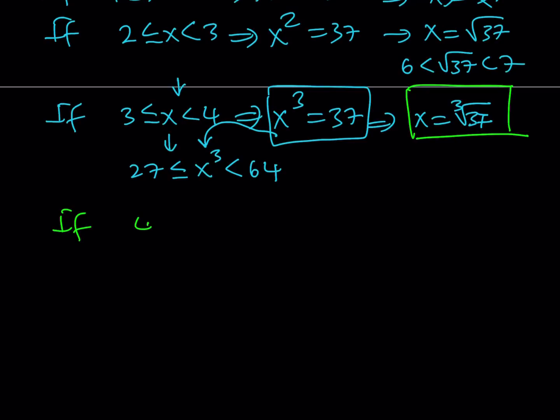If x is between 4 and 5, its floor value is going to be 4 because it's 4 point something, and we're going to get x to the 4th power is 37. Notice that we have a constant on the right-hand side, so it's a little easier to solve, and then we get the 4th root of 37. Again, I'm considering the positive solution here.